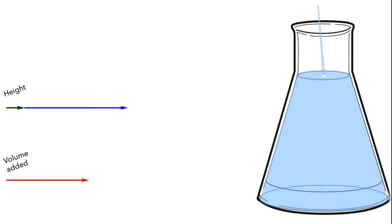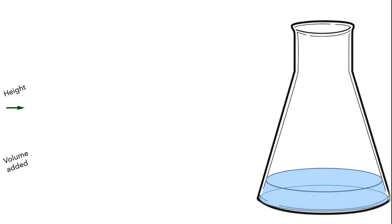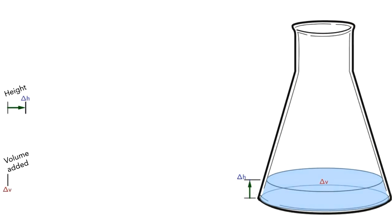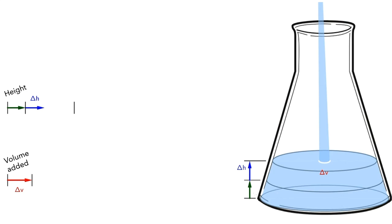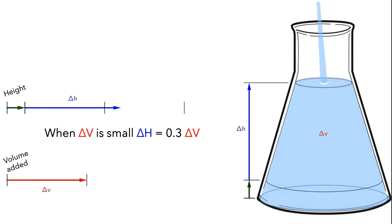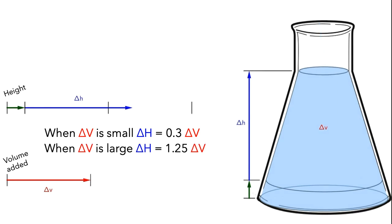Let's rewind the animation and add in the green arrow to show the initial amount of water in the flask, along with labels for delta V and delta H. Let's start the animation again, this time incorporating the black bars to show the amount of change in volume. At first, when the amount of change in volume — the distance between the black bars — is small, the amount of change in height — the length of the blue bar — was only about three-tenths as large as the amount of change in volume. Later, when the amount of change in volume is large, the amount of change in height was about 1.25 times as large as the amount of change in volume.